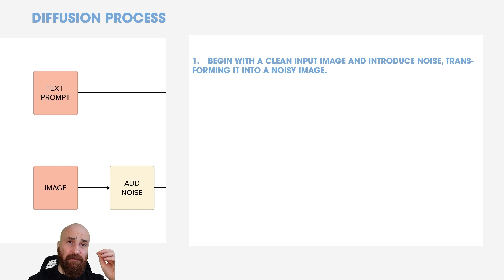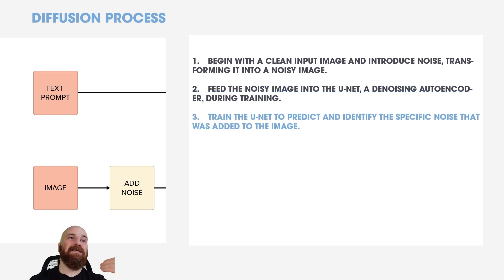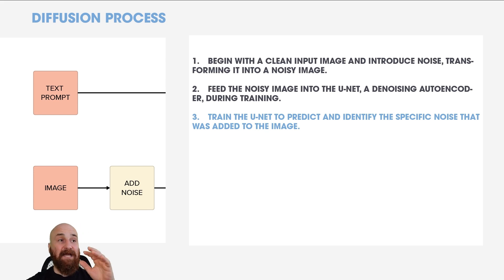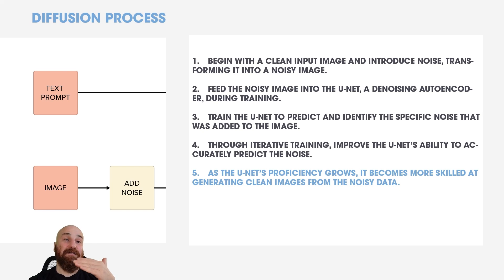The diffusion process begins with a clean input image, introduces noise to transform it into a more obscure noisy image, and then feeds the noisy image into UNet — a denoising autoencoder. UNet tries to predict and identify the specific noise that was added. If it gets really good at determining what noise was added, it becomes better at creating the intended image. Through iterative training, you improve UNet's ability to accurately predict the noise, making it more skilled at generating clean images from noisy data.